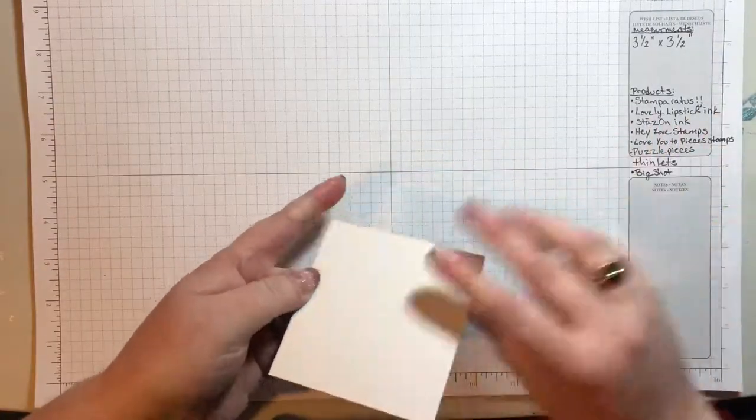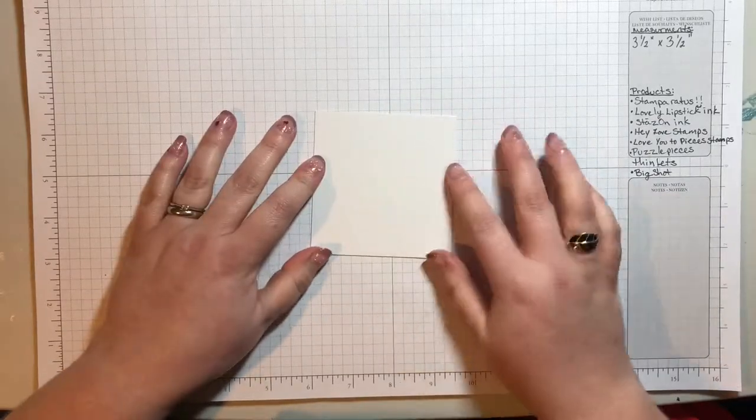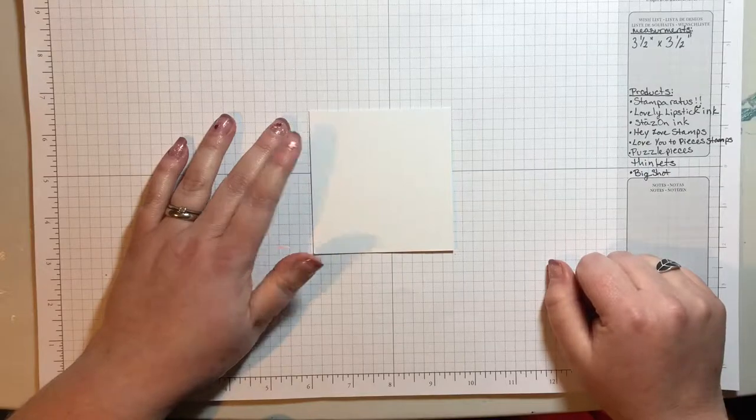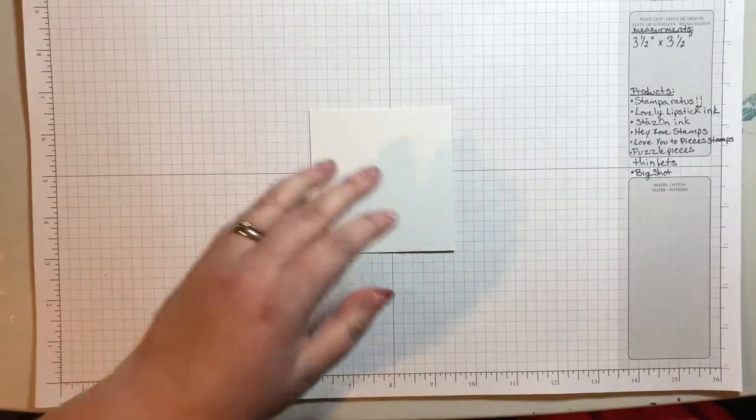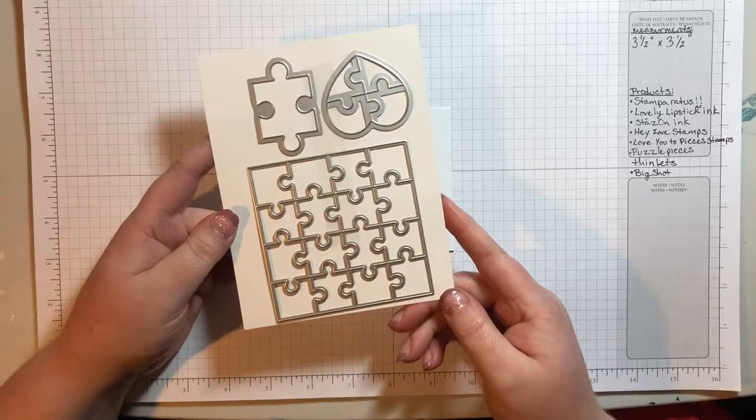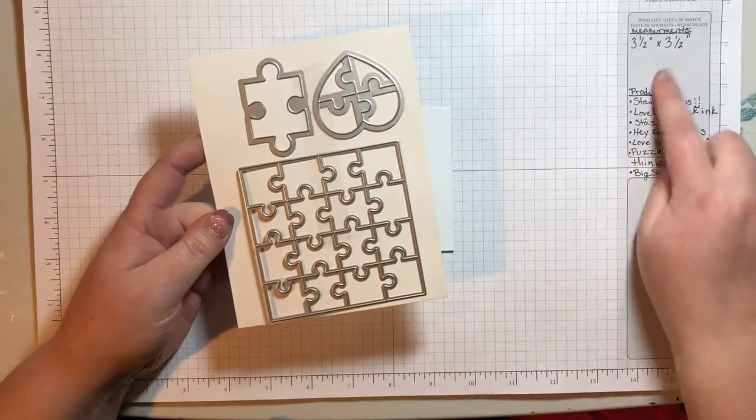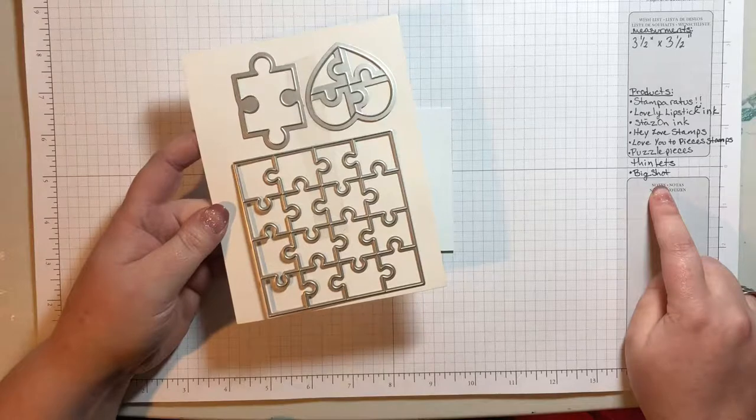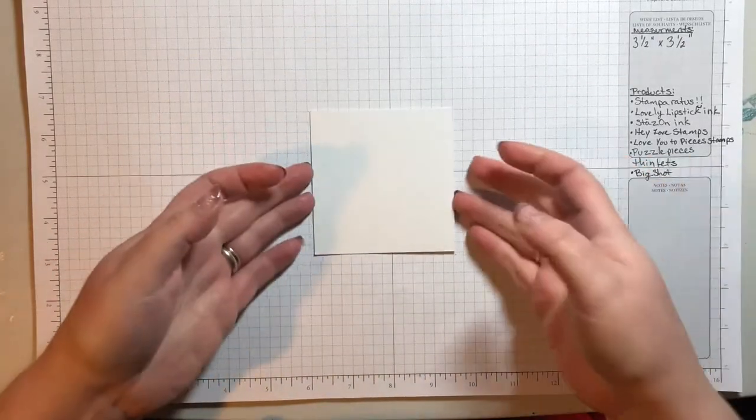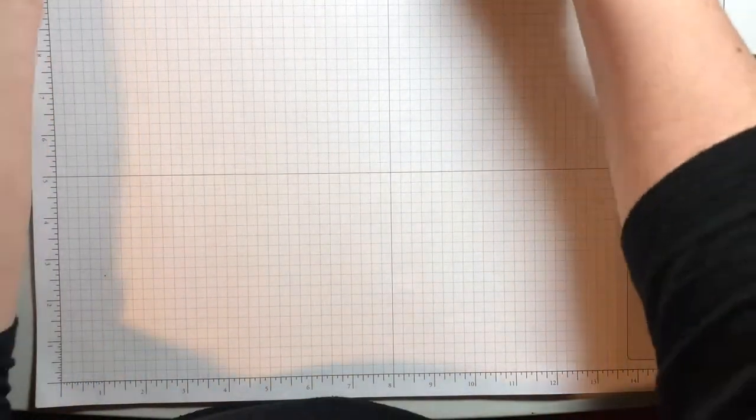So I went ahead and pre-cut a bunch of the poster board down to the right size. 3.5 inches by 3.5 inches is the size of the puzzle die that we'll be using. It's part of the Puzzle Pieces Thinlits. You'll notice over here the measurements and all of the products that I'm using today for this project. Let me show you how to get the Stamparatus set up.